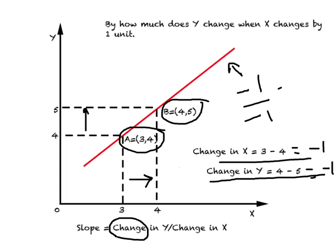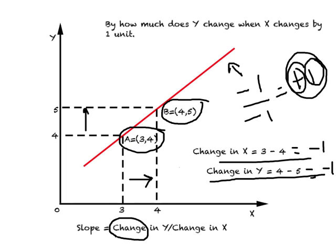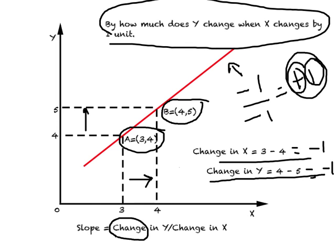Negative 1 divided by negative 1 equals positive 1. When you get a positive sign associated with the slope, it reflects a positive relationship. The number 1 means that when we increase the value of x by one unit, y changes by one unit. If in another example the slope were negative 5, it would mean when you increase x by one unit, y falls by five units.